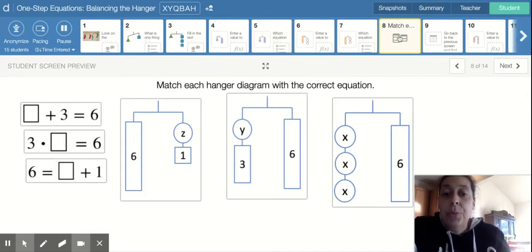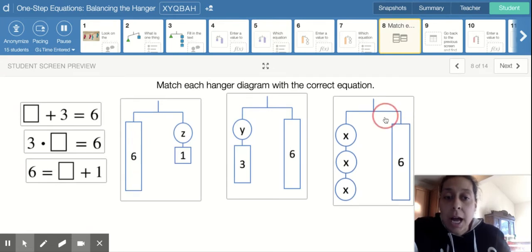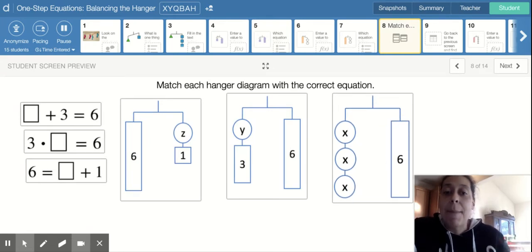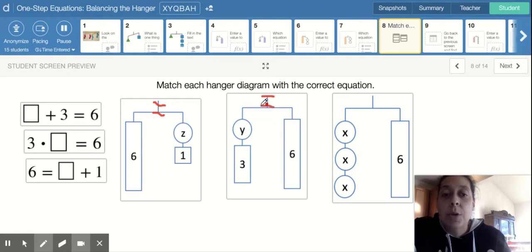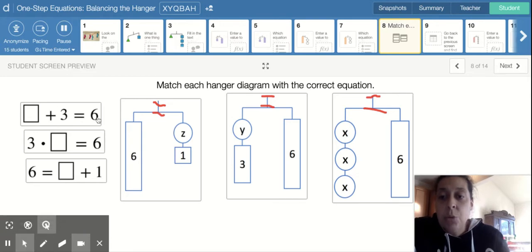The last one I wanted to go through because it was missed a lot was this one where we had to match each hanger diagram with the correct equation. So again, I'm going to go back and make sure that you understand that all of these mean equal. Imagine that these are straight lines, of course, here on the equal.